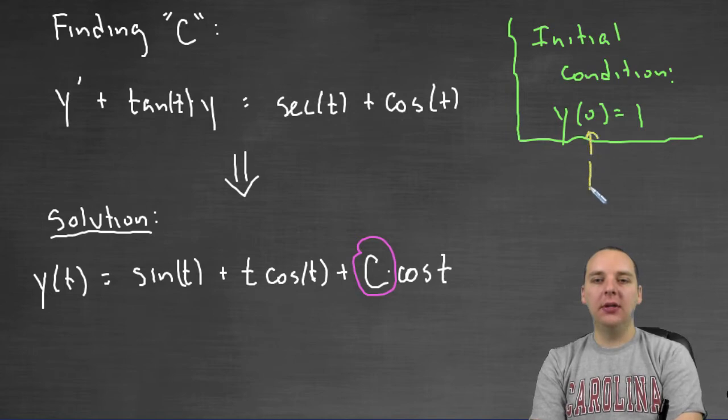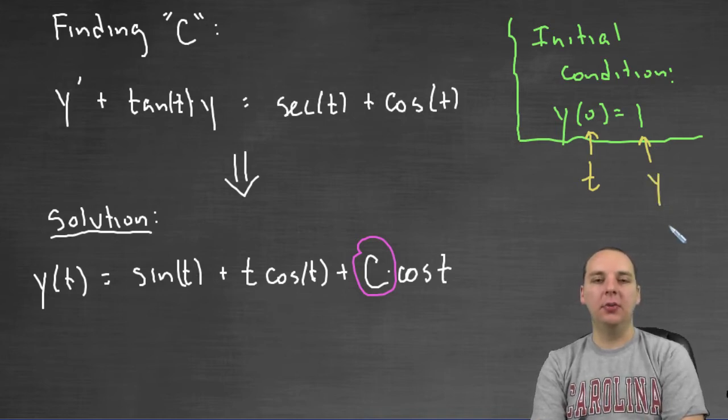The 0 is your t value, your independent variable, and 1 is in this case your y, which is your dependent variable.